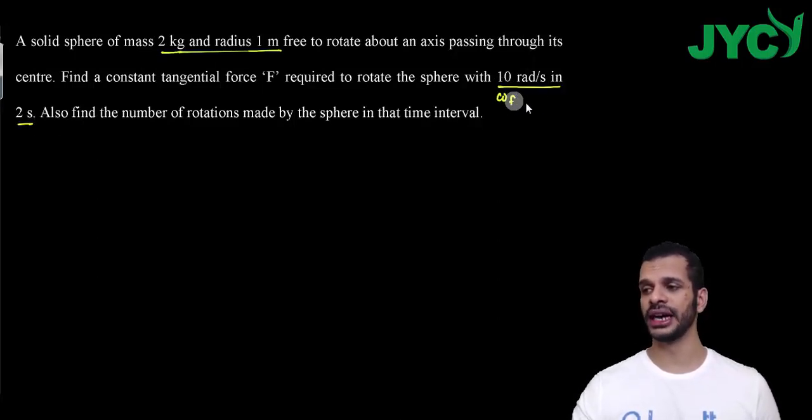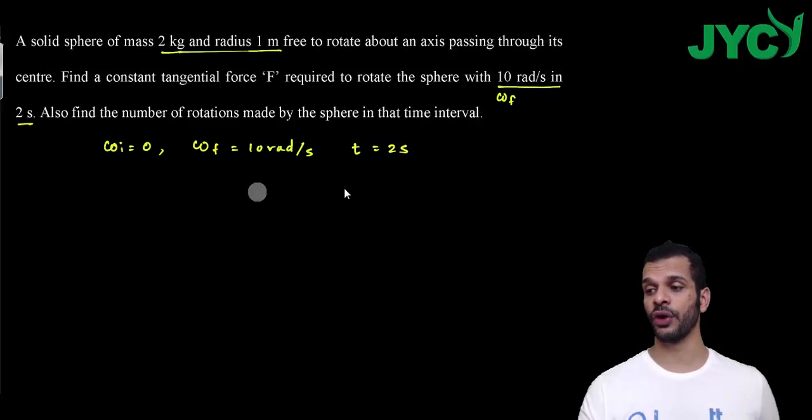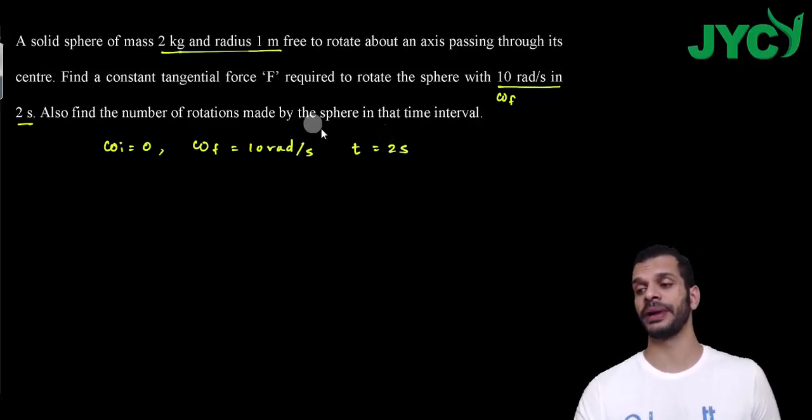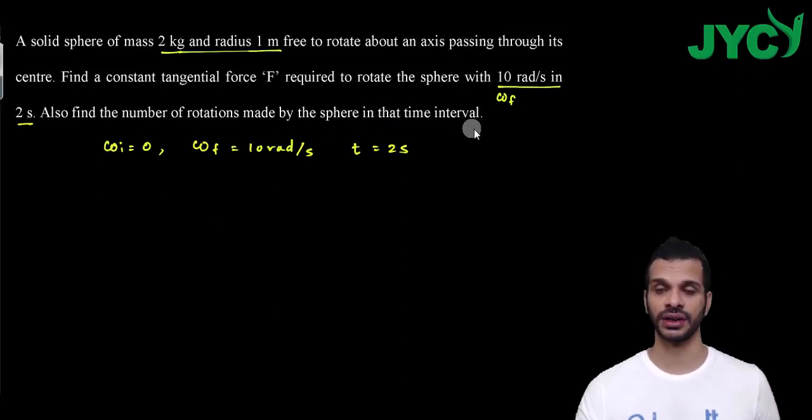So this is omega final, omega initial is 0, angular velocity final is 10 radian per second, and the time is 2 seconds. So now the information is enough. Also find the number of rotations made by the sphere in that time interval. So first of all, tangential force F and number of rotations.